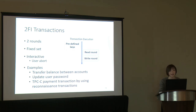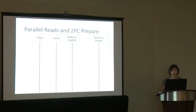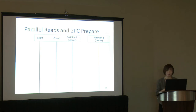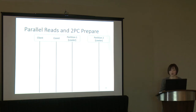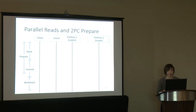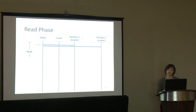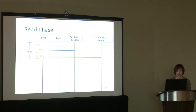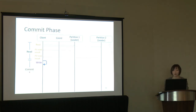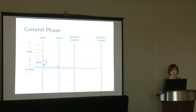Based on the 2FI transaction model and architecture, I can now describe Carousel in detail. This example shows how Carousel reduces latency by parallelizing the read operations with 2PC prepare. The transaction in this example touches two partitions — partition one's leader and the coordinator are in the same data center as the client, while partition two's leader is remote. This is a time diagram where time flows downward. Carousel consists of four phases: the read phase, followed by a commit phase, with the prepare phase running in parallel with the read and commit phases, and finally a synchronized write-back phase.